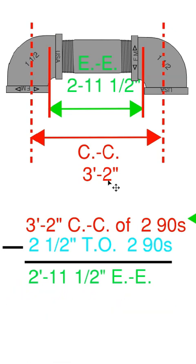As you can see here in the sketch, we have three foot two center of one 90 to the center of the other 90.